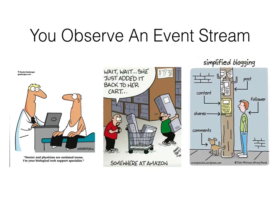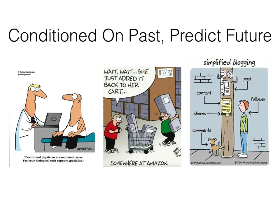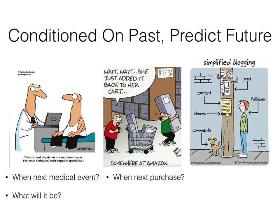You observe an event stream. For a doctor, it can be a sequence of tests and diagnoses. On Amazon, it can be a sequence of purchases. On Facebook or Twitter, it can be a stream of posts and shares. Conditioned on the past, you want to predict the future. When is the next medical event? What will it be? When is the next purchase? What item? When is the next retweet? Who does it?